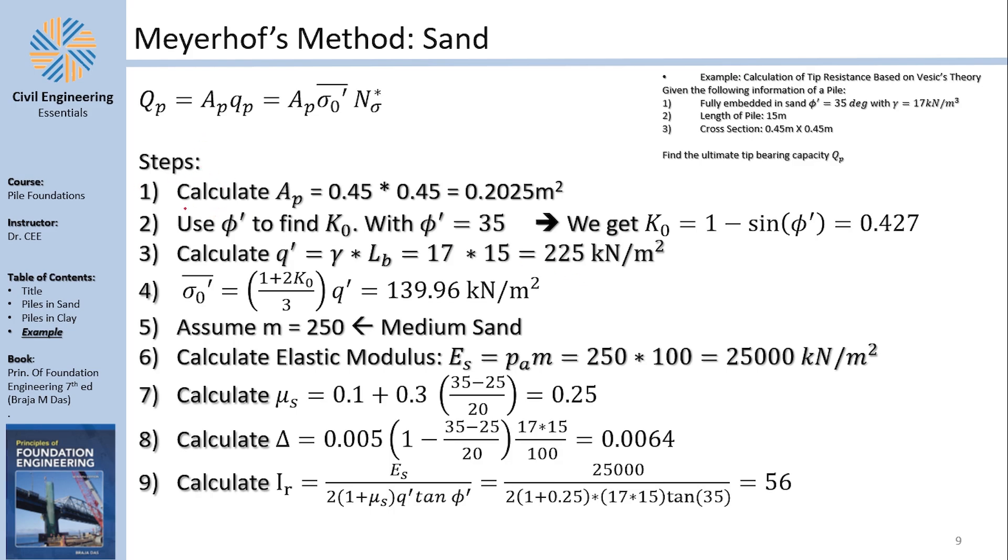Now here, I'm trying to give you step by step, because once again, I want you to have steps to solve examples for this. Qp equals Ap multiplied by qp, which is this stuff. Now to be able to find this stuff, let me give you a quick roadmap.